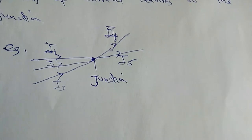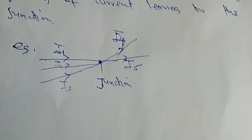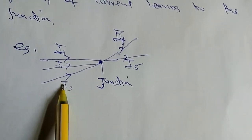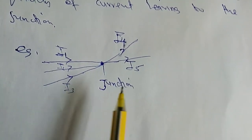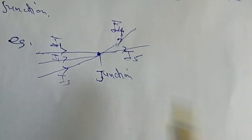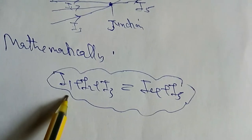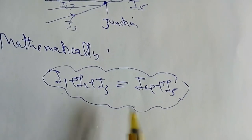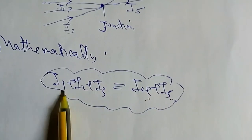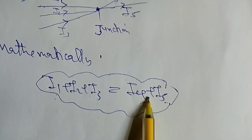So what happens? The total current of all terminals entering into the junction — which are current 1, current 2, and current 3 — is equal to the total quantity of current leaving the junction, which are current 4 and current 5. Mathematically: I1 + I2 + I3 = I4 + I5.